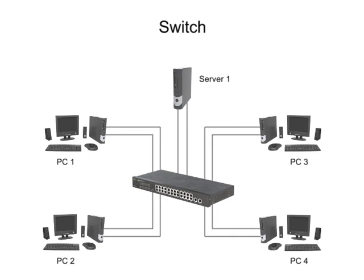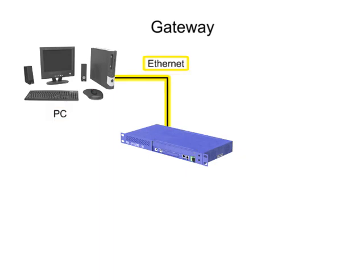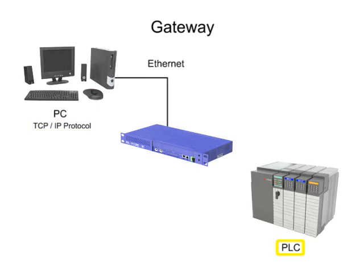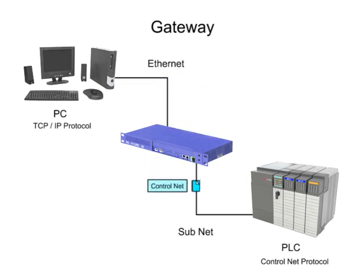When two segments of the same network have different communication formats, a gateway is needed to connect them. A gateway performs a conversion function so that a computer on an Ethernet network using a TCP/IP protocol may communicate with a PLC on a subnet using the ControlNet protocol. Even though these two protocols are incompatible, the gateway can connect them on the same network and allow them to function together.